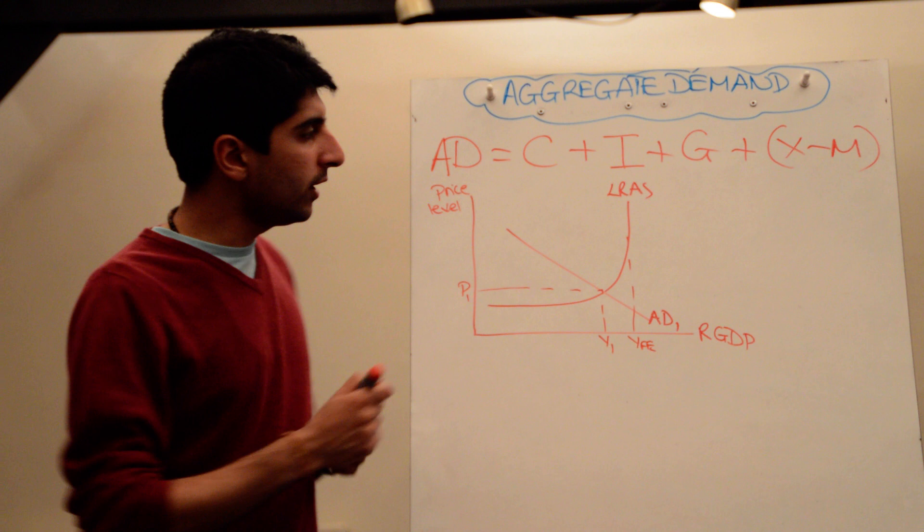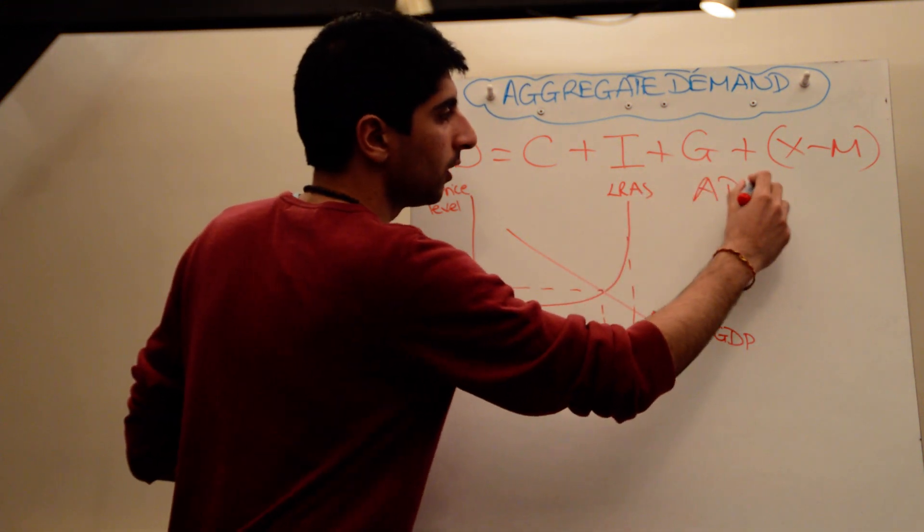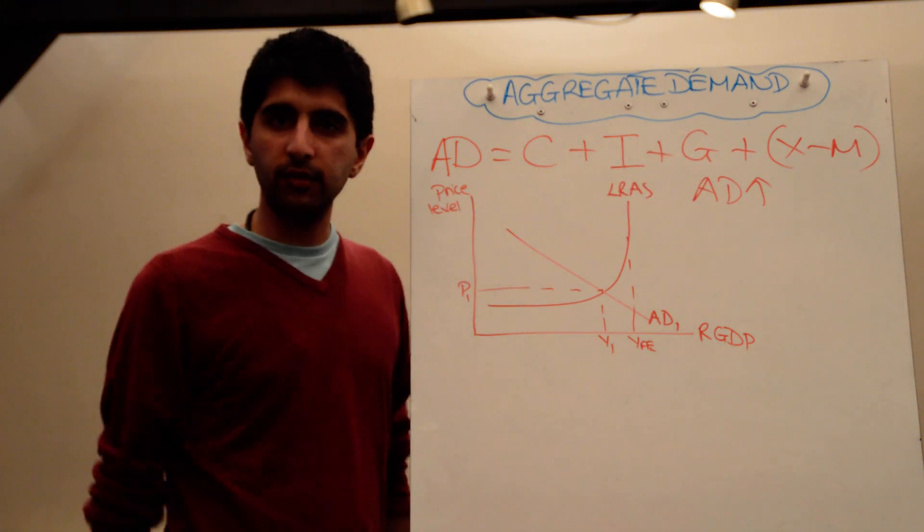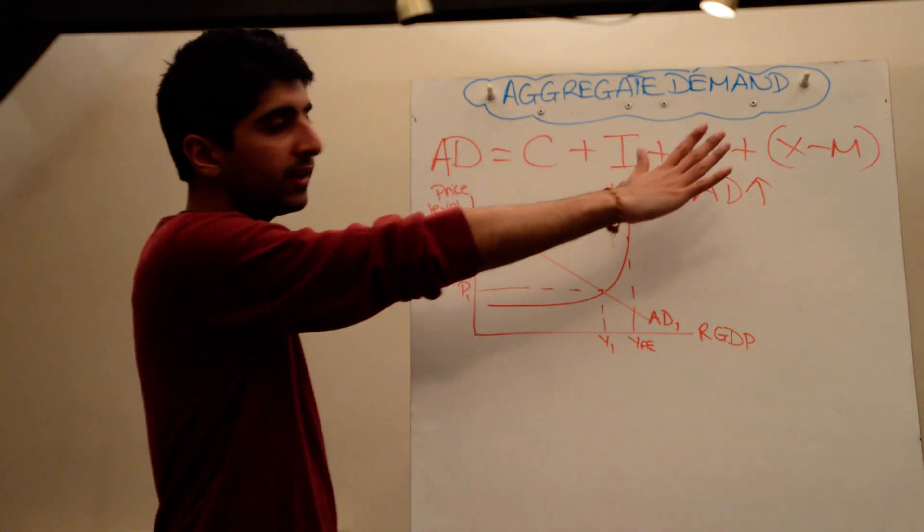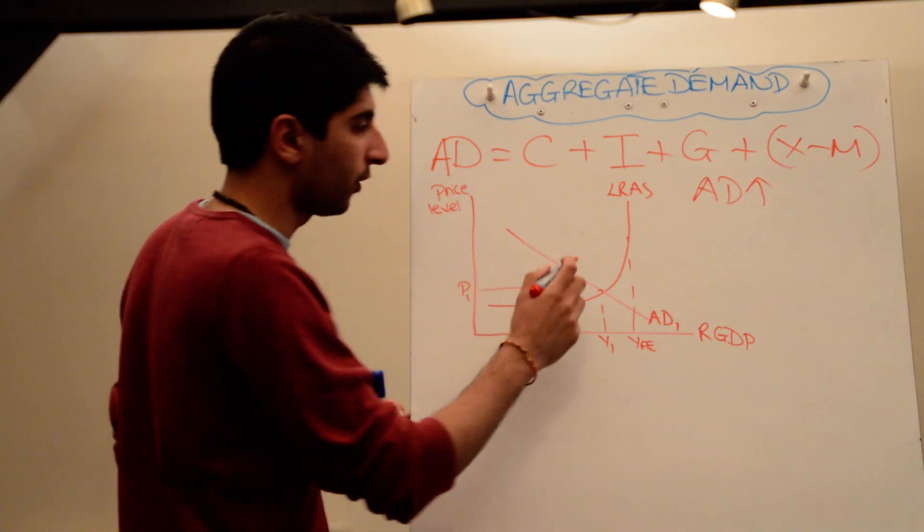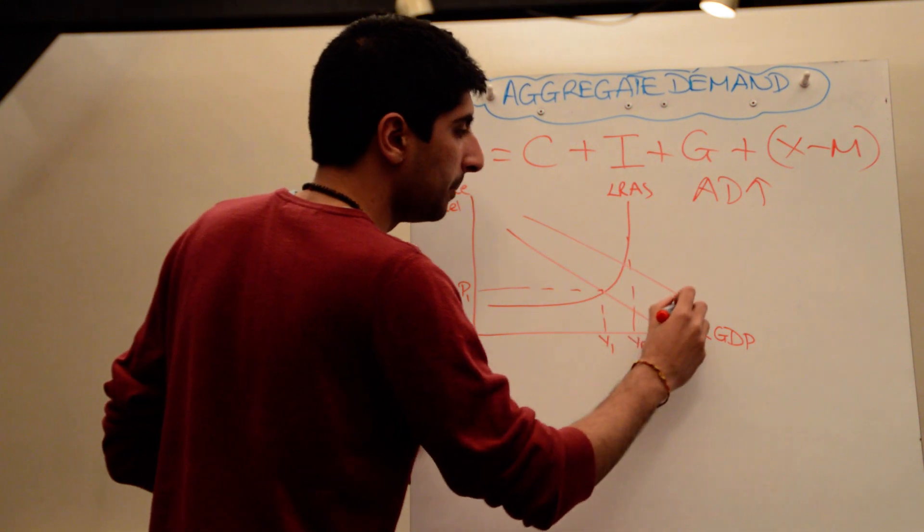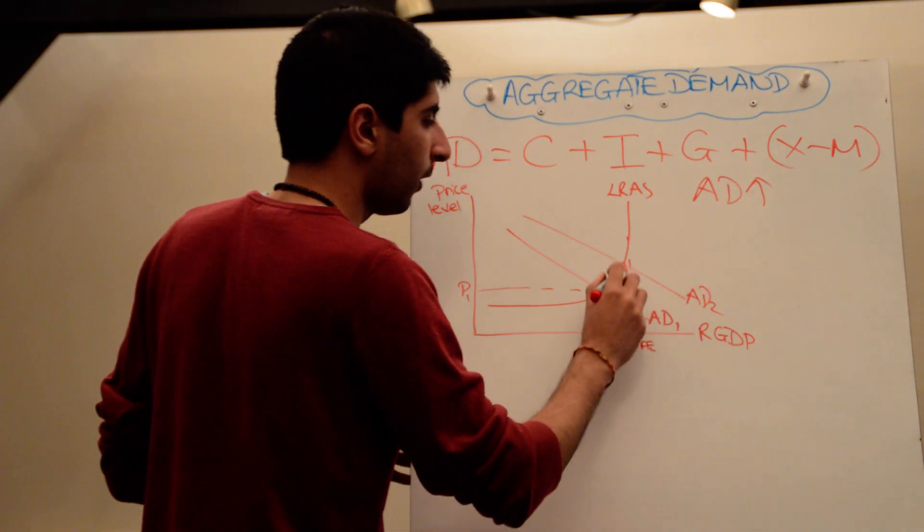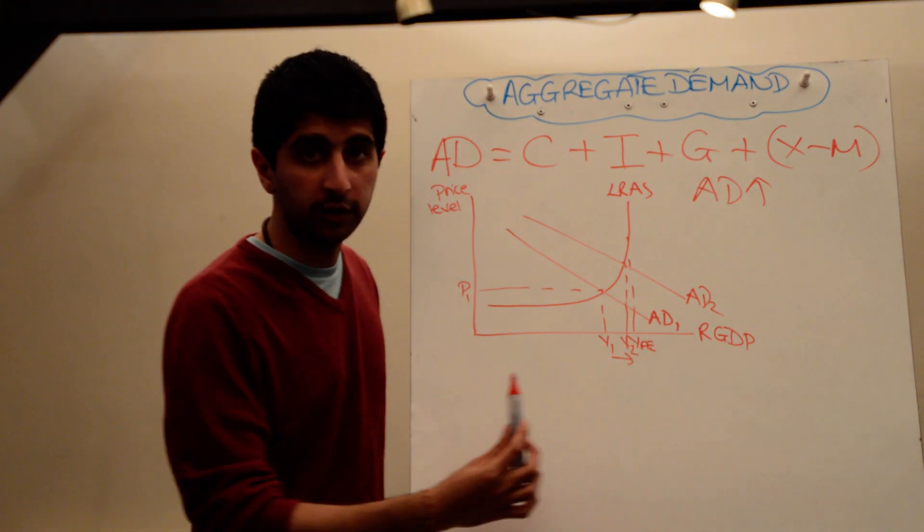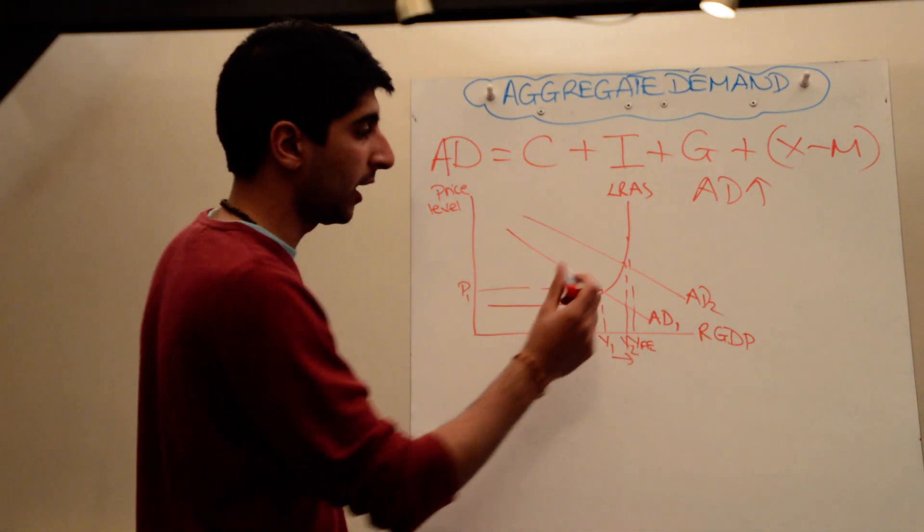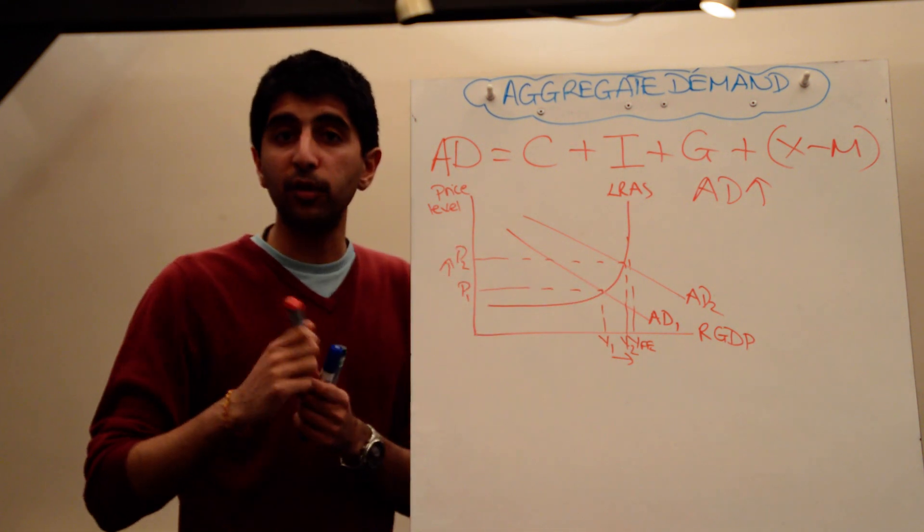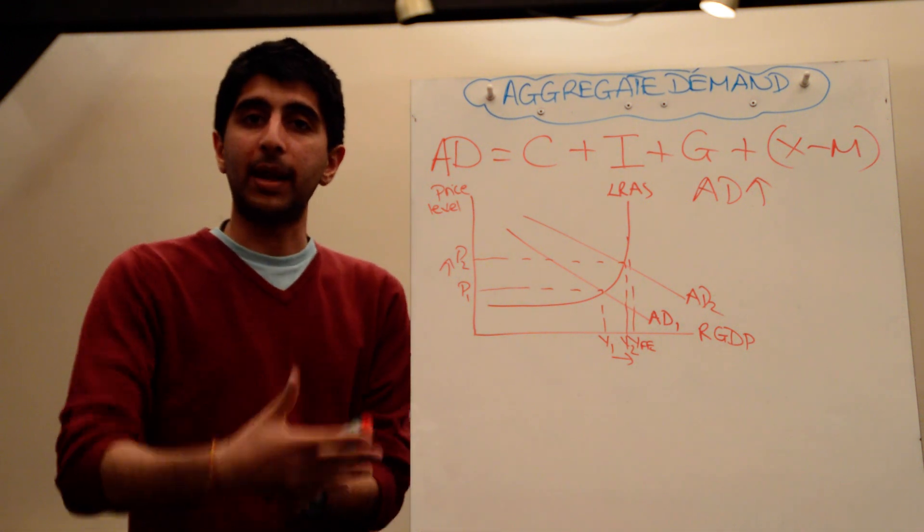When will aggregate demand increase? AD will increase when any of these variables increase. If there is an increase in any one of these things, there will be an increase in aggregate demand and an increase in economic growth. If I increase aggregate demand, it shifts to the right, and when it shifts to the right, there is an increase in actual growth from Y1 to Y2, and therefore a reduction in unemployment. There is also some demand pull inflationary pressure. Demand pull inflation is caused when aggregate demand increases.